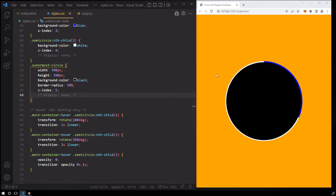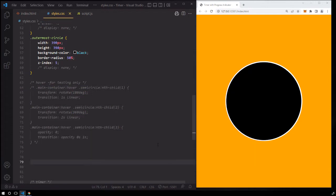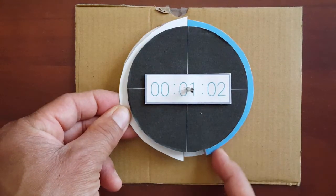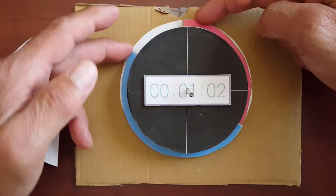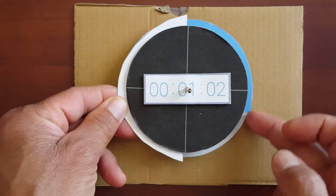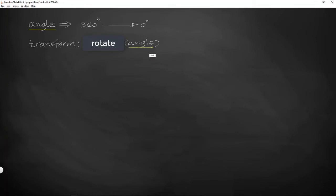Now that we know our rotation works, we don't need this hover effect anymore, so let's comment these lines out. What we really want is the semicircles to rotate counterclockwise — from 360 degrees to zero. So we need an equation involving an angle that changes with time. We know the progress indicator starts at 360 degrees and goes to zero, so we need to multiply 360 degrees by a factor that starts at one and goes down to zero — a fraction as a multiplier.